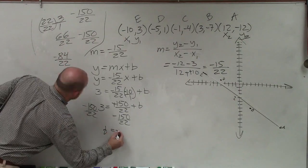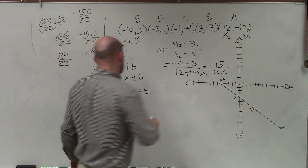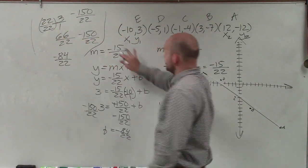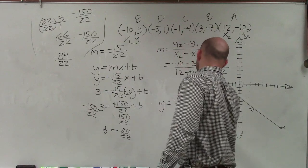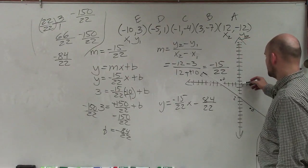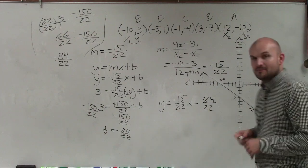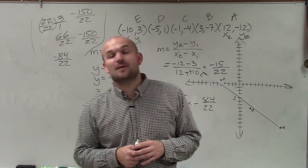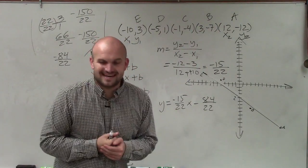That means b equals negative 84 over 22. Now, my linear equation is y equals a slope of negative 15 over 22x minus 84 over 22. So there you go, ladies and gentlemen. That is how you write a best fit line using two points of a scatter plot. Thanks.